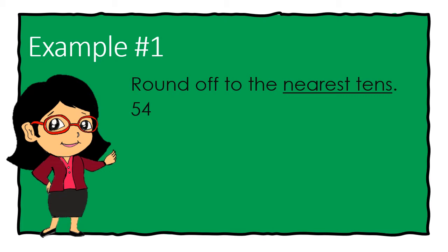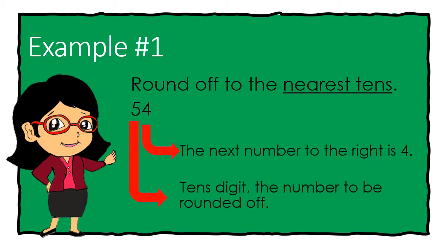For example, round off 54 to the nearest tens. 5 is found on tens. This is the digit to be rounded off. 4 is the next number to its right.